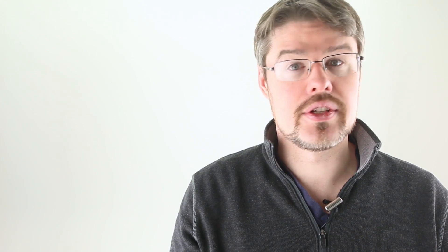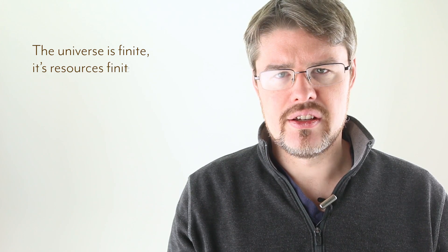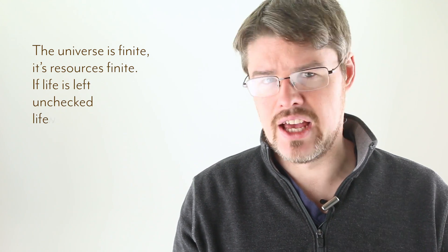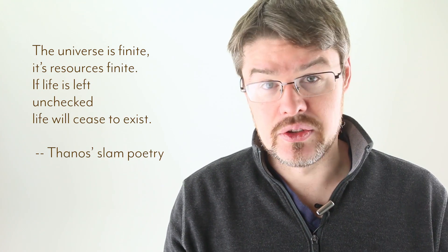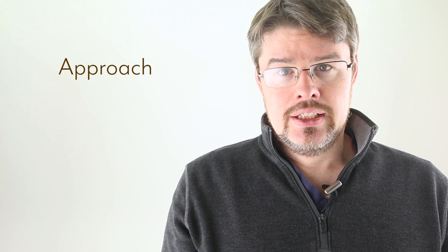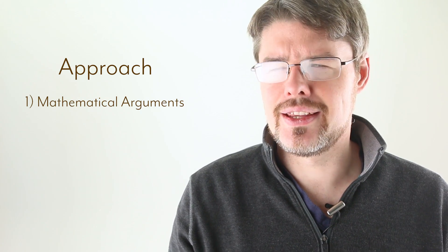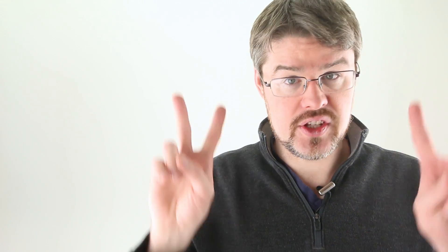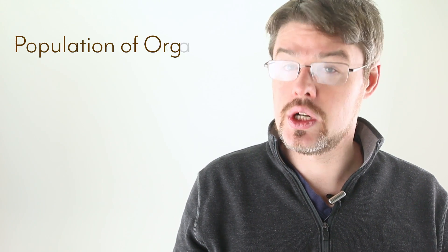First, let's try to understand Thanos' logic, such as it is. And I quote, The universe is finite. Its resources are finite. If life is left unchecked, life will cease to exist. Thanos concludes from this premise that the best course of action is to destroy half of all life. I'm going to attack this in two major ways. The first mathematically, and the second logically. To understand the mathematical problems this solution has, we need to first understand in broad strokes the math we use to describe the populations of organisms.